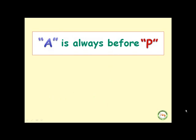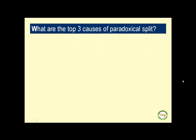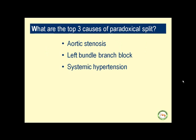The two unique features of paradoxical split are: closure of the pulmonary valve before the aortic valve, and the fact that the split is pronounced in expiration and diminishes or vanishes with inspiration. A mnemonic: the letter A always comes before P in the English alphabet, except in the paradoxical situation where the aortic valve closes after the pulmonary — just as you write the letters of the word 'paradox.' The top three causes of paradoxical split are aortic stenosis, left bundle branch block, and systemic hypertension.